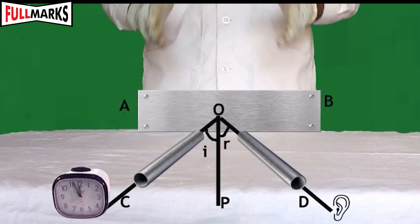Now place the second tube so that its one end is near to the point O. Bring your ear close to the other end and adjust its position such that it collects the maximum reflected sound.